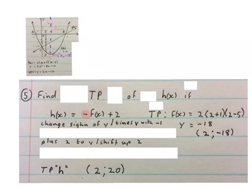So we go to this y value and change the sign. Then we plus 2 to the y value or in other words shift it up. So the turning point of h of x will be (2,20).